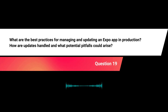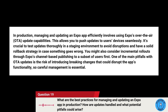What are the best practices for managing and updating an Expo app in production? Managing and updating an Expo app efficiently in production involves using Expo's over-the-air (OTA) update capabilities to push updates to users' devices seamlessly. It's crucial to test updates thoroughly in a staging environment to avoid disruptions and to have a solid rollback strategy in case something goes wrong. Consider incremental rollouts through Expo's channel-based publishing to a subset of users first. One main pitfall with OTA updates is the risk of introducing breaking changes that could disrupt the app's functionality, so careful management is essential.